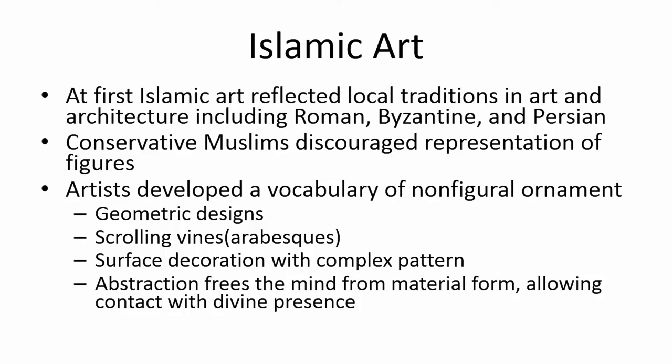As the religion spreads and becomes more refined, they develop their own type of architecture and art form, including a vocabulary of non-figural ornaments — geometric designs, scrolling vines. The script morphs into designs, calligraphic swirls, and complex patterns that only somebody who can read it very well would be able to decipher. This abstraction is meant to free the mind from material form and allow contact with the divine presence — there's a degree of meditative worship in this.